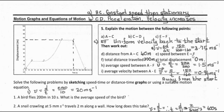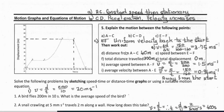Part E: what's the speed between E to F? Speed is calculated as change in distance divided by change in time. The displacement at E is 150 meters and it goes back to zero, so 150 meters is traveled. The time is from 160 to 200 seconds — a change of 40 seconds. So the speed is 150 divided by 40, which gives 3.75 meters per second.